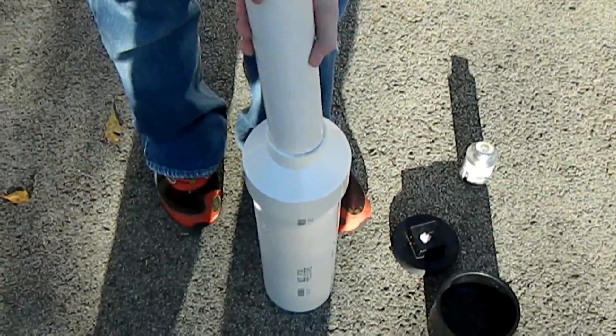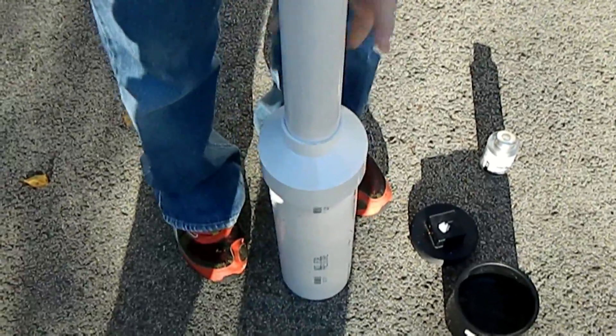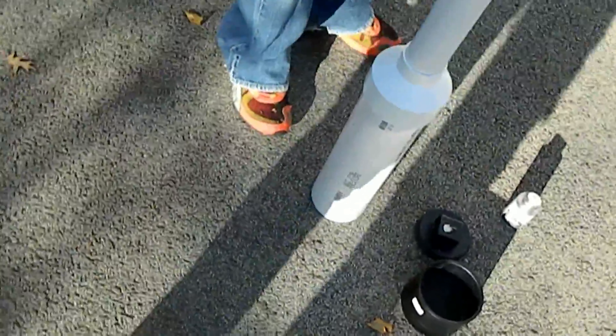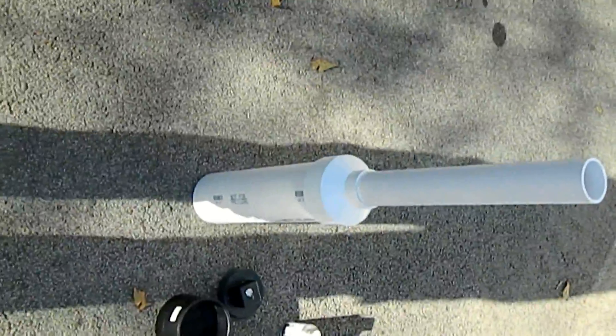Once that's done, you can place your 2 inch PVC, making sure it's pretty straight. This is how it should look so far.